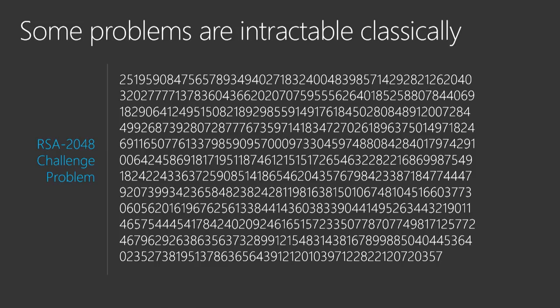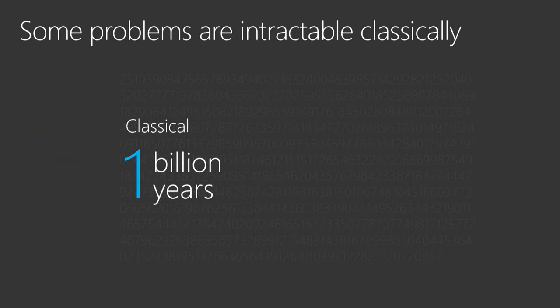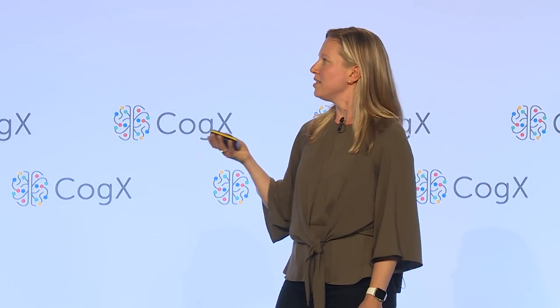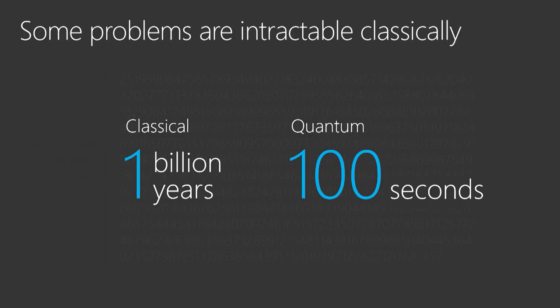This is a problem that's easy for conventional computers in the forward direction — we can multiply large numbers very fast — but figuring out which two large primes were multiplied together to produce this key is extremely hard. In fact, using conventional compute, this 2048-bit key would take on average about a billion years to factor. But with a quantum computer of the right size and sufficiently high qubit quality, this is a problem that can be solved in about a hundred seconds.